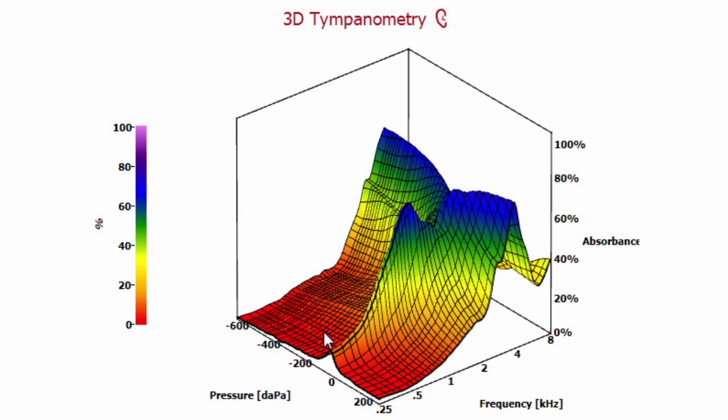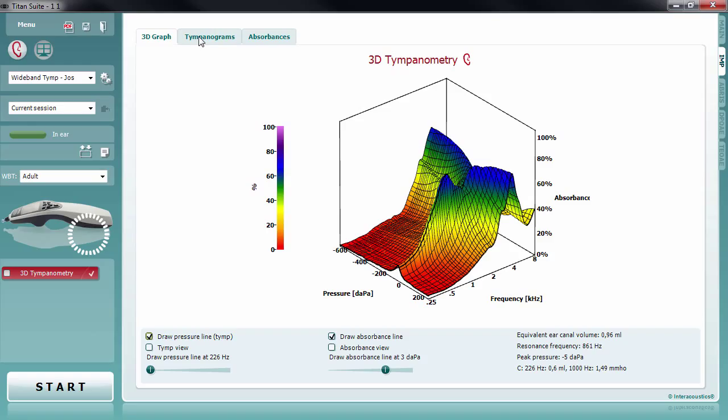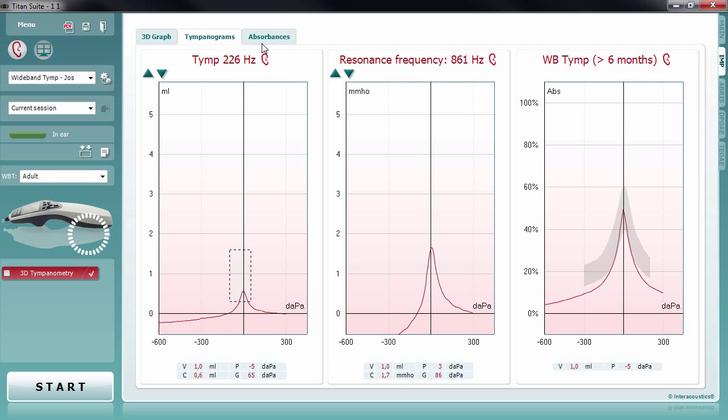Although you will learn over time to recognize if this graph represents normal or abnormal middle ear function, you do not need to make interpretations from the 3D graph itself. The data most commonly used for interpretation is displayed in the tympanograms tab and the absorbances tab.